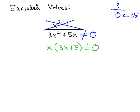Once it's factored, we can set each factor equal to 0, or in this case, not equal to 0. This includes the GCF of x is not equal to 0, and the 3x plus 5 is not equal to 0.